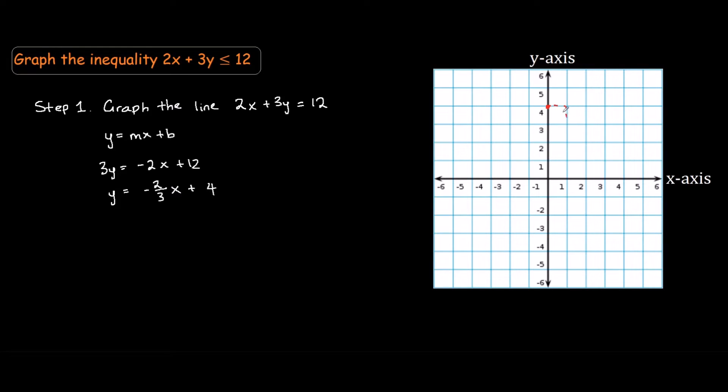For x equals 1, you go down 2 thirds, so I would just say when you go across 3, it will go down 2 in total.